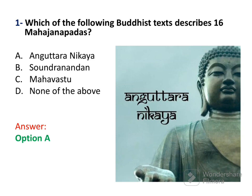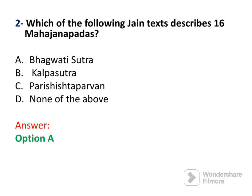Which Buddhist text describes the 16 Maha Janpads? The answer is Anguttar Nikaya. The next question asks about the Jain text which describes the 16 Maha Janpads — that is option A, Bhagwati Sutra. So: Buddhist text was Anguttar Nikaya, Jain text was Bhagwati Sutra.